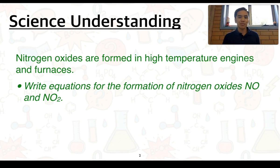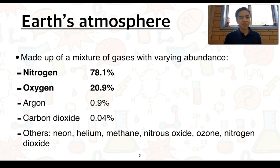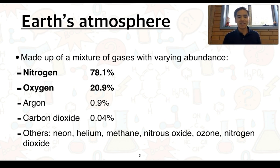Nitrogen oxides are formed in high temperature engines and furnaces. You'll need to know how to write equations for the formation of nitrogen oxides NO and NO2. The atmosphere is made up of a mixture of gases which vary in their abundance. Nitrogen makes up the majority at 78.1%, oxygen 20.9%, and the remaining 1% includes gases like argon and carbon dioxide.